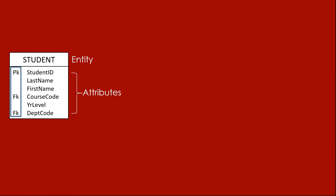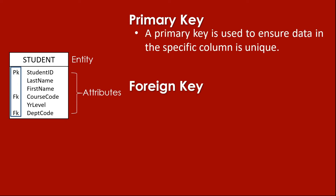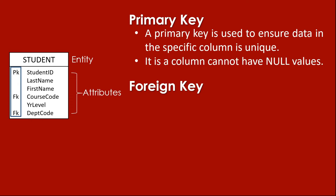Now we can see here PK and FK. So what are PK and FK? PK stands for Primary Key and FK is for Foreign Key. A primary key is used to ensure data in a specific column is unique - it is a column that cannot have a null value. In our ERD, a primary key is an attribute that is unique in every entity. For example, each student has their own unique student ID, so the primary key here is the student ID, and it cannot be null.